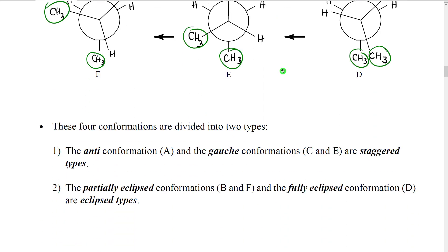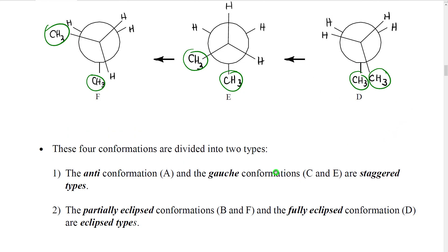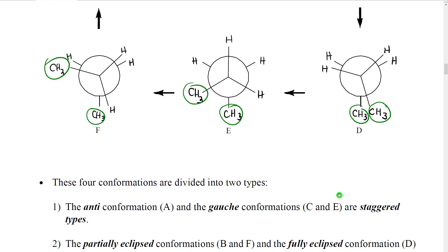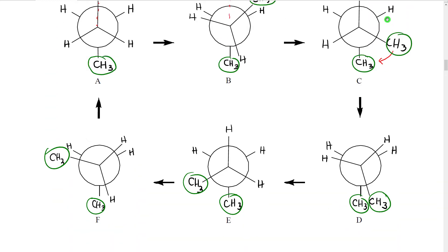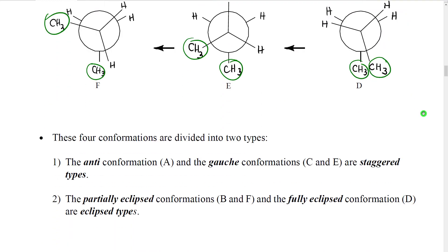Putting this all together, we have four different types of conformations. We have two that are staggered: conformation A, which we call the anti conformation, where the two methyl groups are 180 degrees apart; and conformations C and E, which we call the gauche conformations. In the gauche, the methyl groups are 60 degrees apart, but the conformations themselves are still staggered.